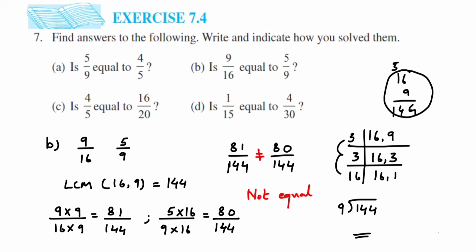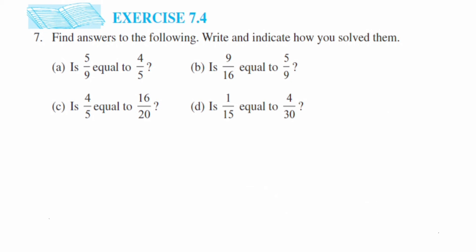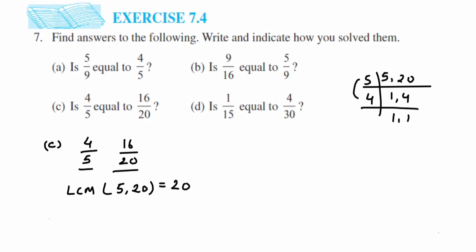Moving to problem (c) — by cross multiplication we found they are equal; let's verify with the LCM method. We have 4/5 and 16/20. Denominators are not the same, so take the LCM of 5 and 20. The LCM of 5 and 20 is 20 itself: 5 ones are 5, 5 fours are 20. So LCM is 20.